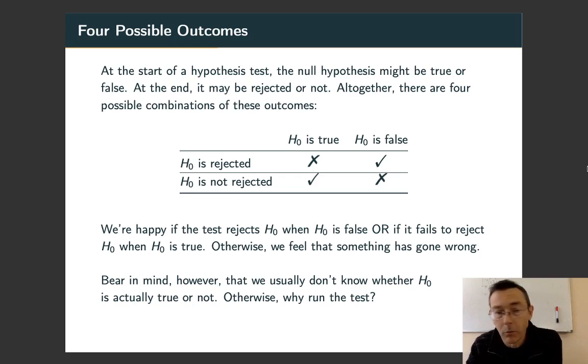I've got a table here summarizing it. And two of these combinations make us happy. We reject H0 when H0 is false. We do not reject H0 when H0 is true. That leaves two situations that are not so good.